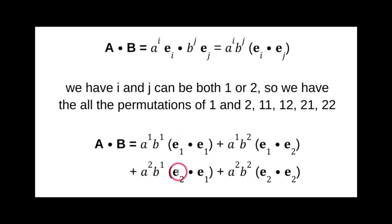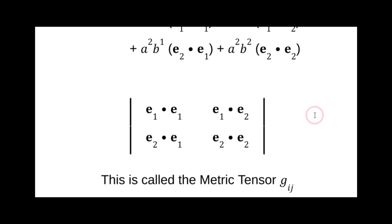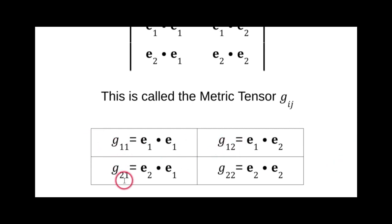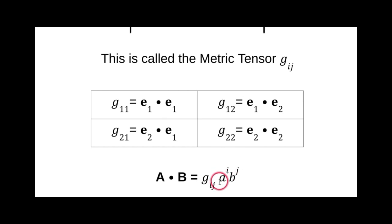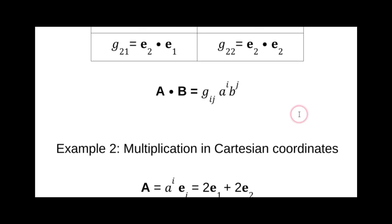The dot product of basis vectors eᵢ·eⱼ has special meaning — it is called the metric tensor, written as gᵢⱼ. The components are g₁₁, g₁₂, g₂₁, and g₂₂. We can then write the generalized form of the dot product as gᵢⱼ times the product of the vector components. This is the generalized form of the dot product in relativity.